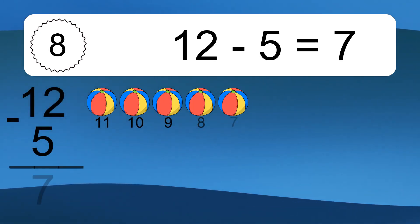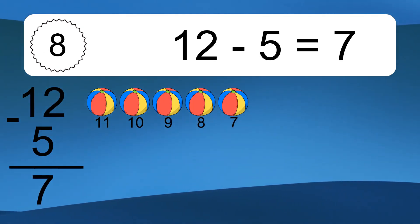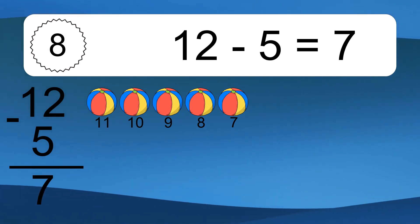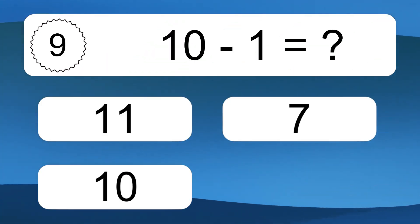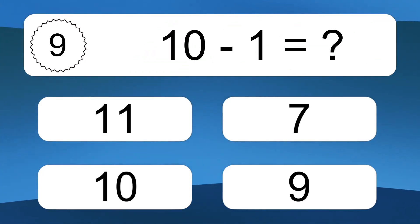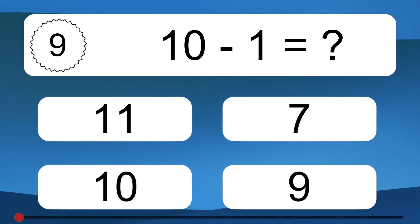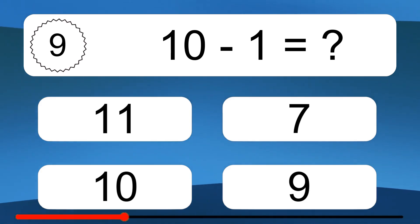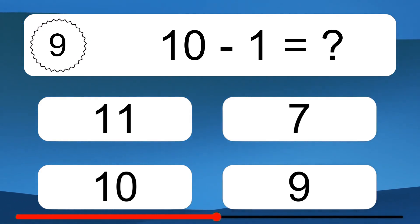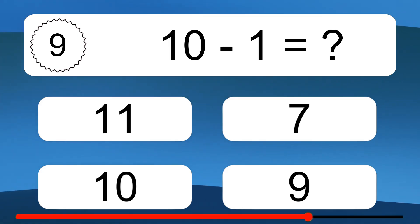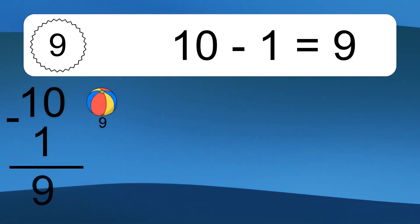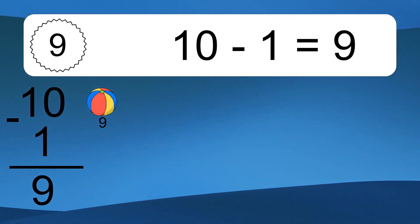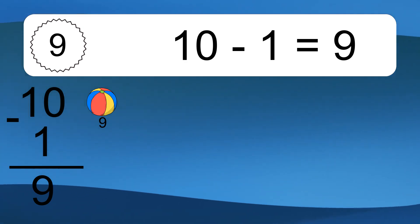12 minus 5 equals 7. Let's count it: 11, 10, 9, 8, 7. 10 minus 1 equals what? 10 minus 1 equals 9. Let's count it: 9.